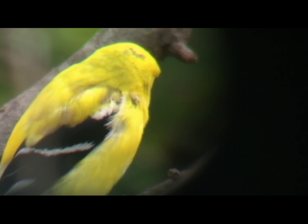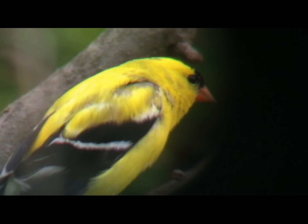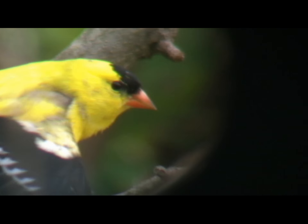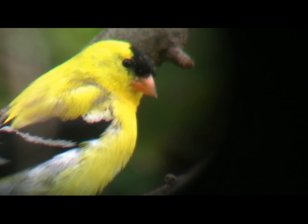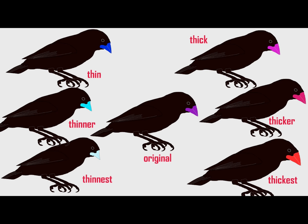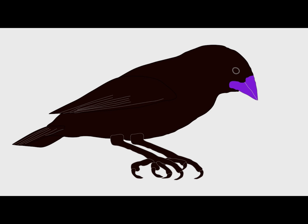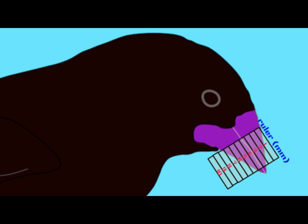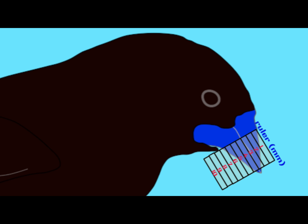Since Darwin's finches are commonly used as examples of natural selection, these animations depict stabilizing, directional, and disruptive selection acting on finches. Imagine a scenario where finch beak depth — how thick the beak is — can vary, and this affects how well they can feed on various seeds, with thicker beaks being more adaptive for thicker seeds, which typically occur in drier environments, and birds with thin beaks being more efficient at feeding on softer seeds, more typical in wet environments.